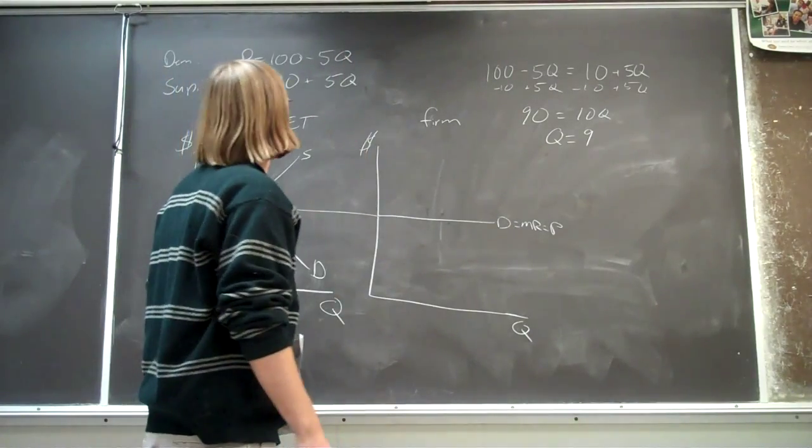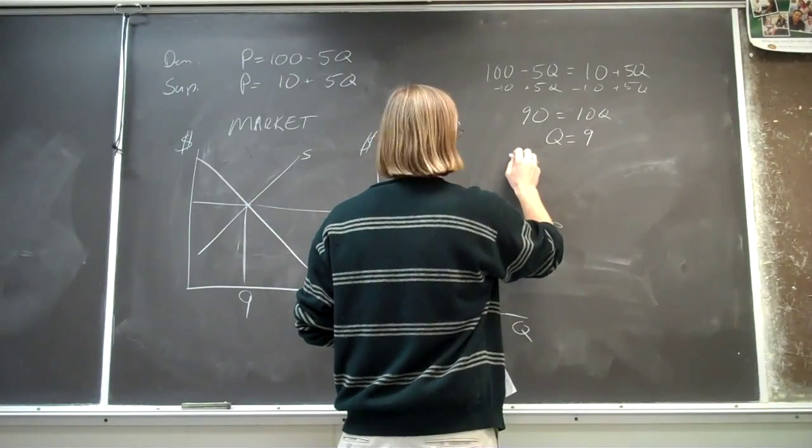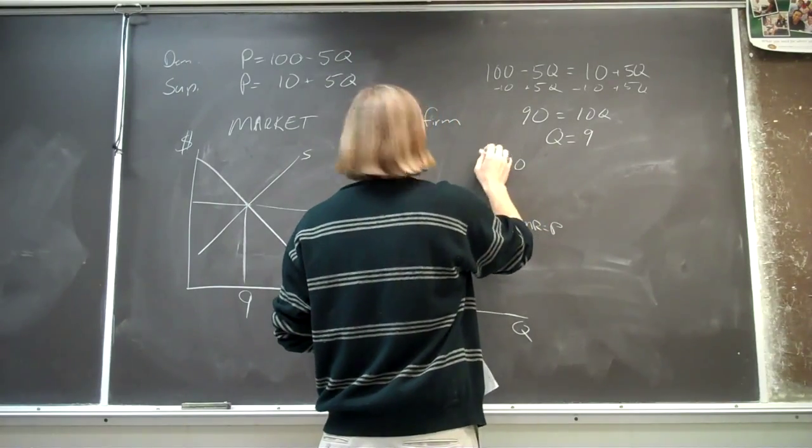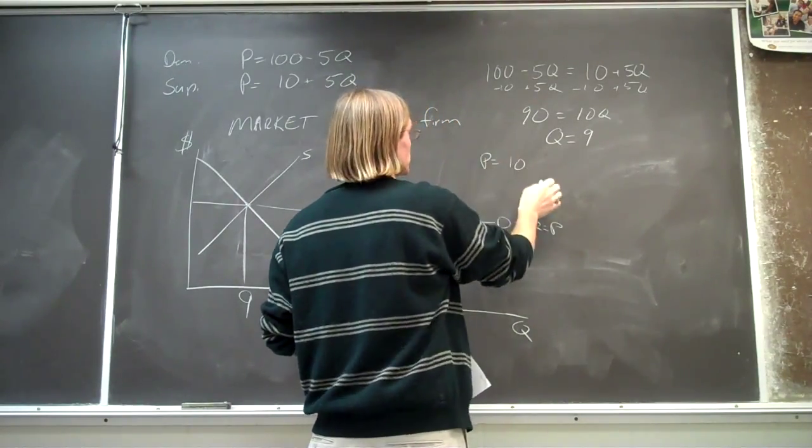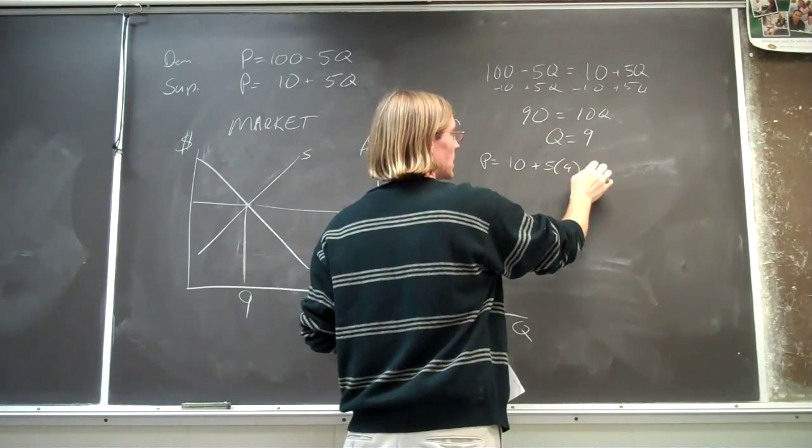And then we can plug that quantity back in to either of the equations. So if we say the supply equation, if we've got the price is equal to 10 plus 5 times 9,